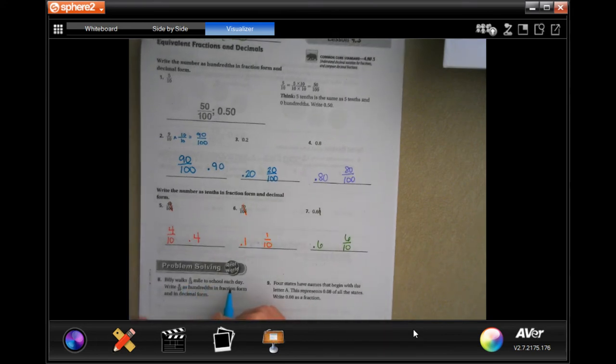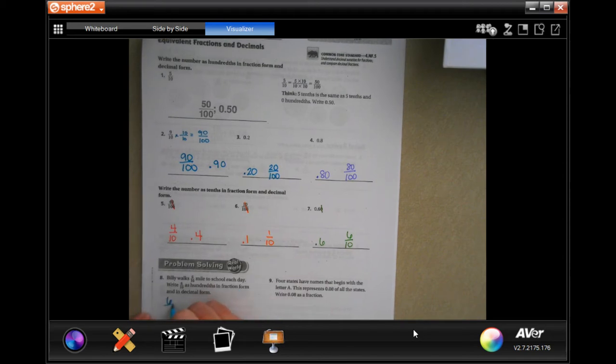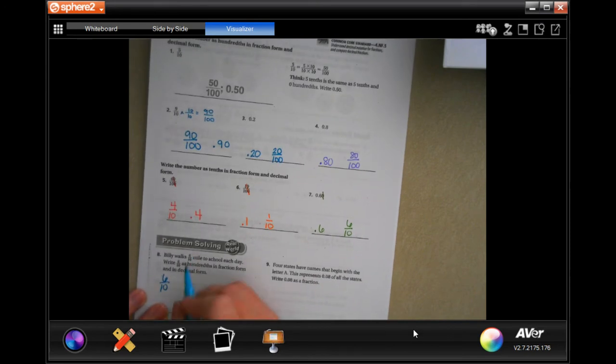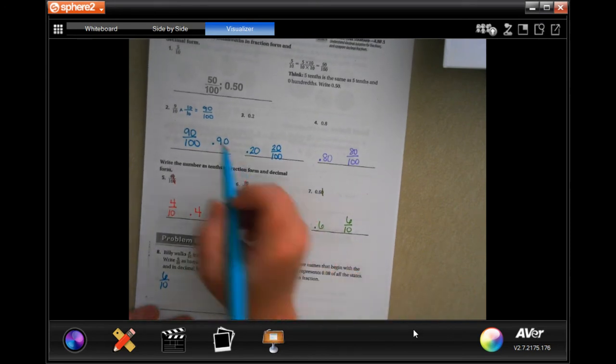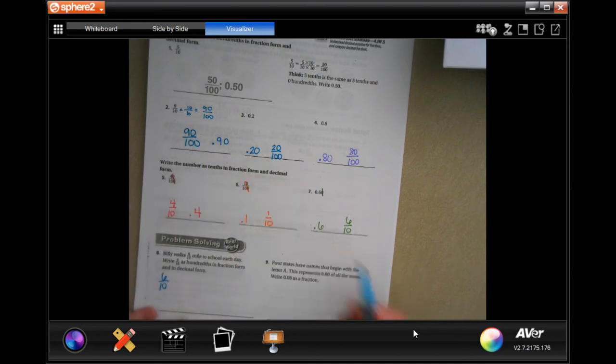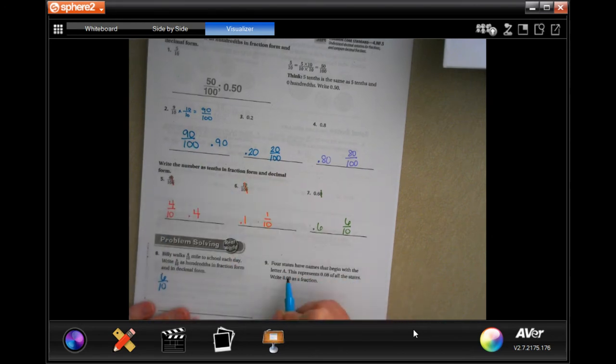Billy walks six-tenths of a mile to school each day. Write six-tenths in hundredths form. You guys are going to do that. It's going to be the same as these ones. Four states have names that begin with the letter A.